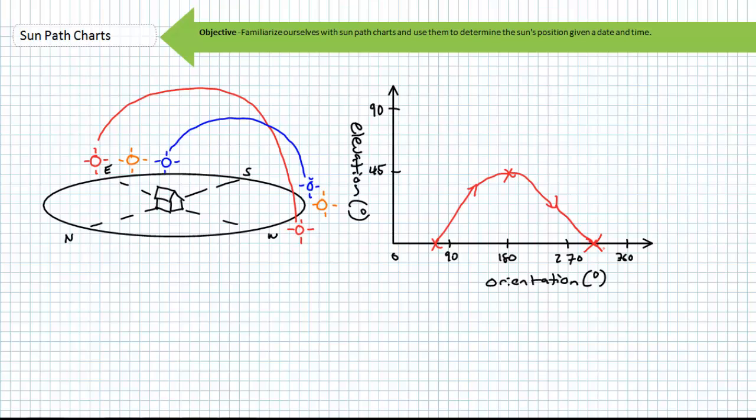Over the course of a day the sun will scribe a single line through the sky where each point on this line is capable of being relayed with three data points, namely orientation, elevation and time. At this particular day at 10 a.m. the sun will be at 130 degrees orientation and 25 degrees elevation with respect to the horizon.